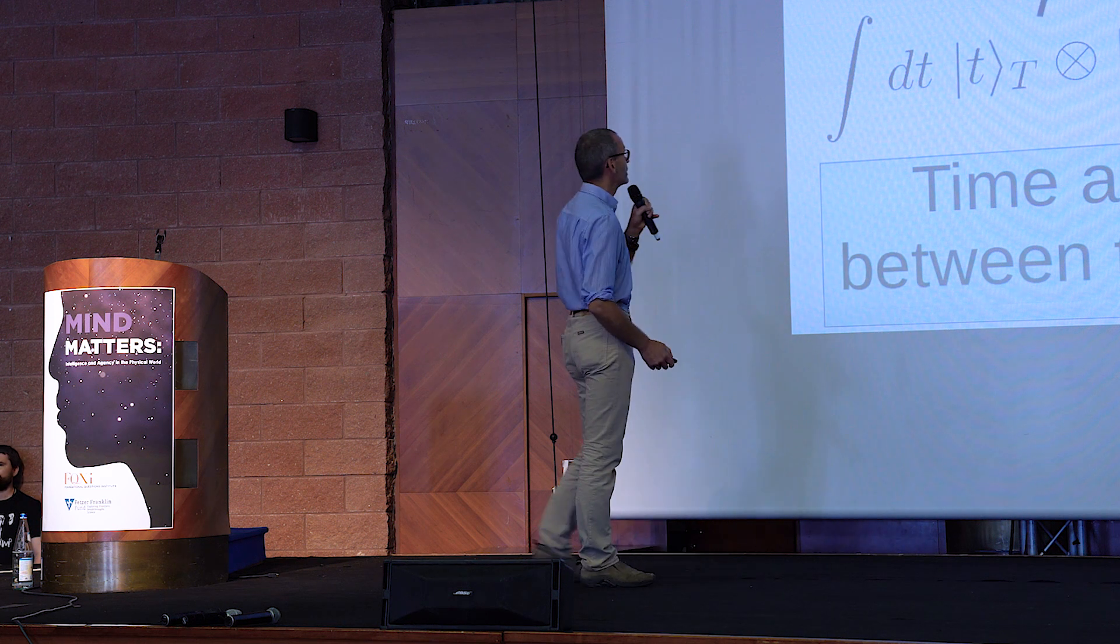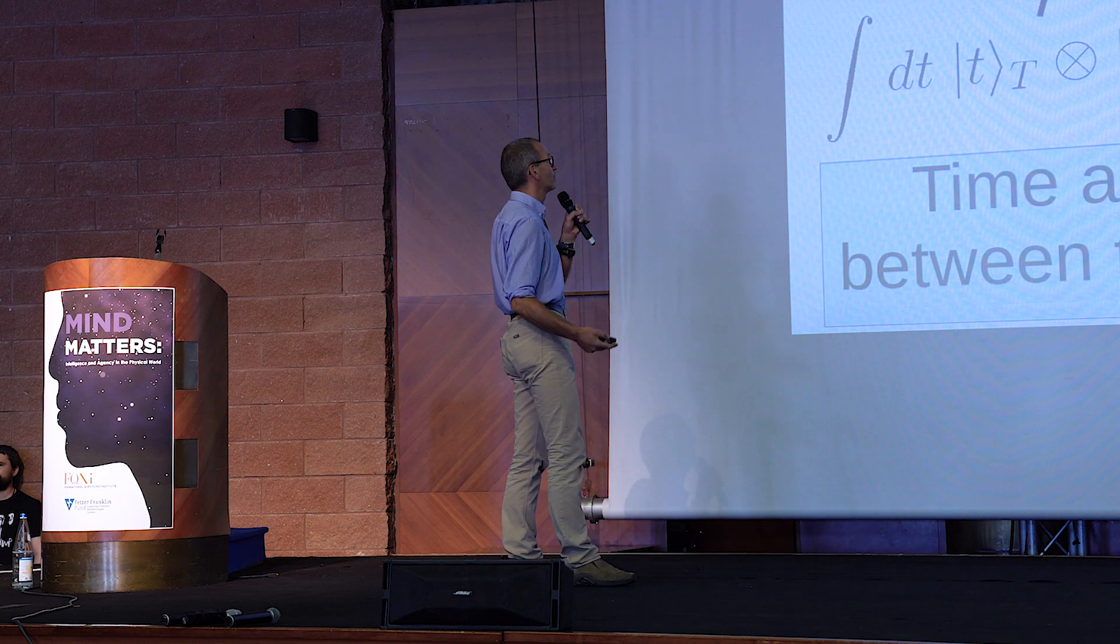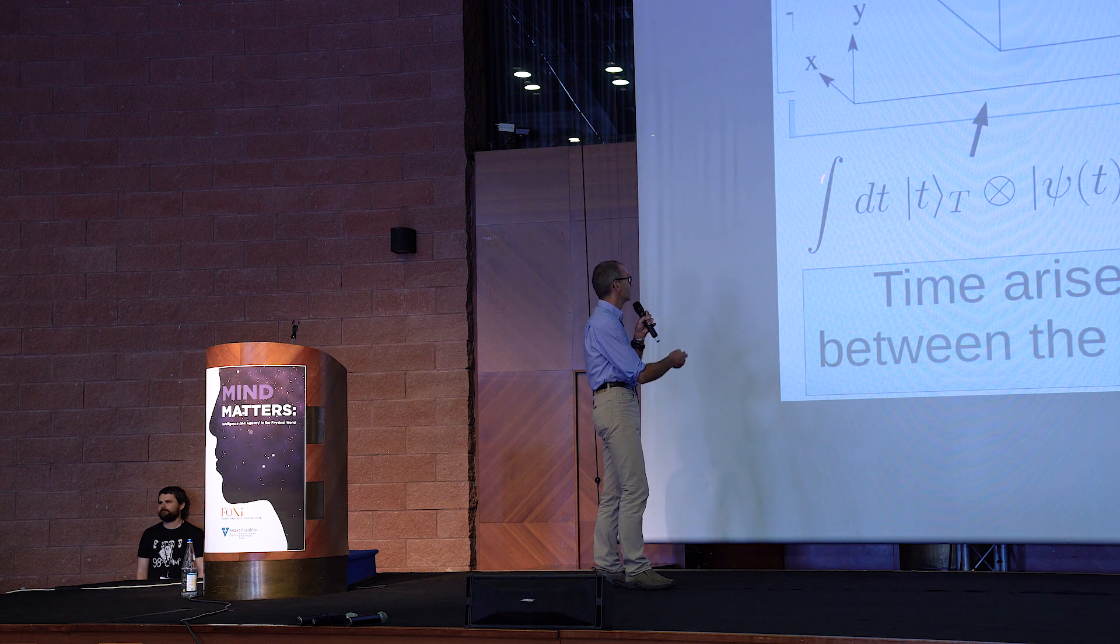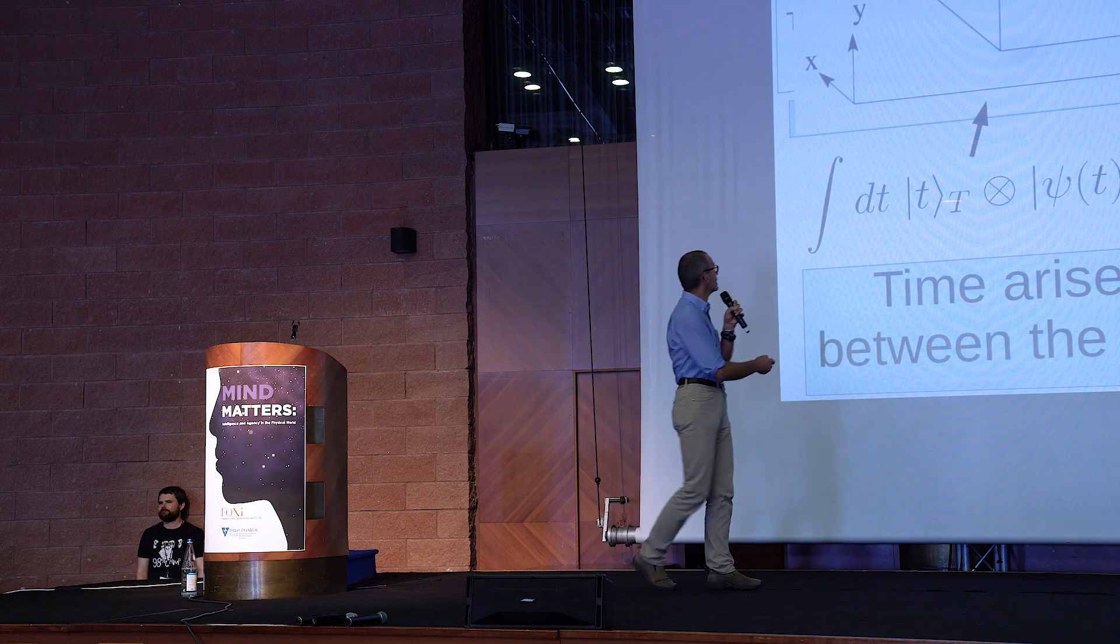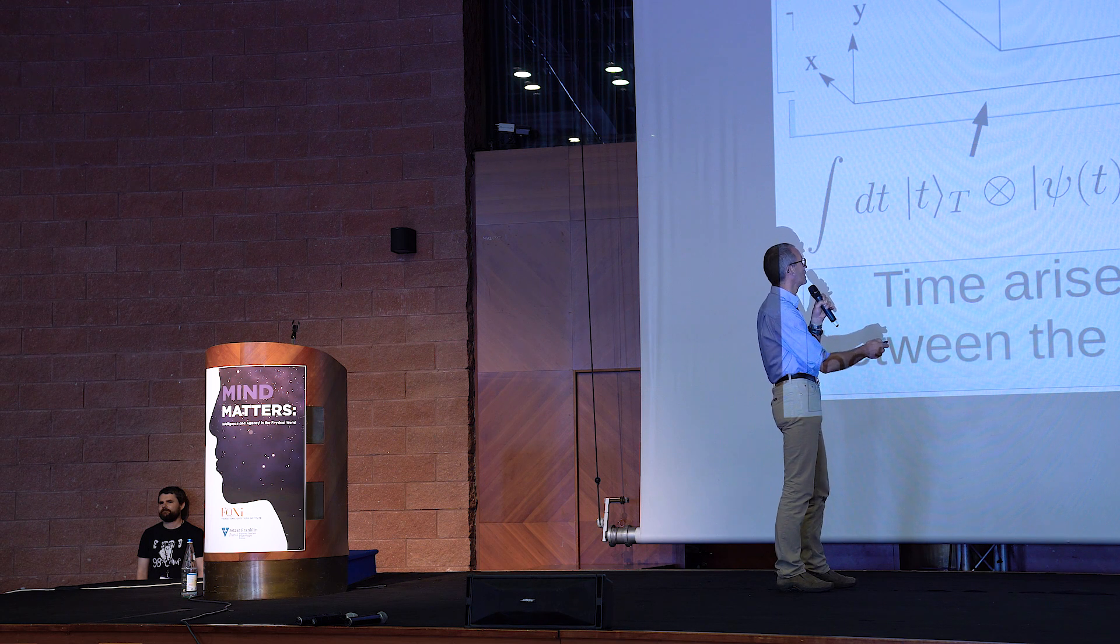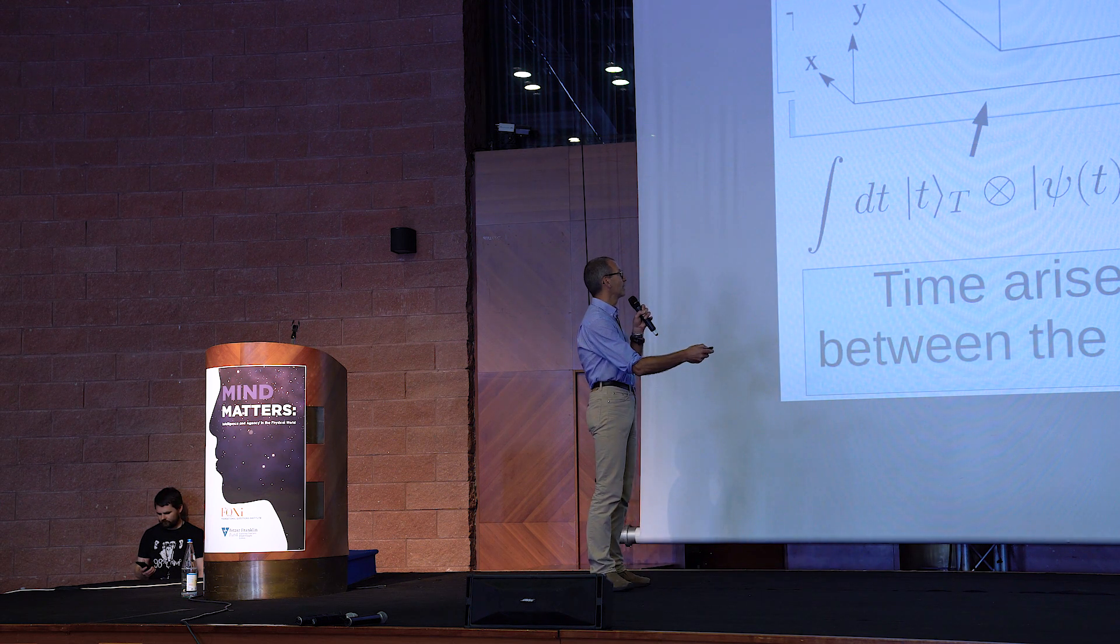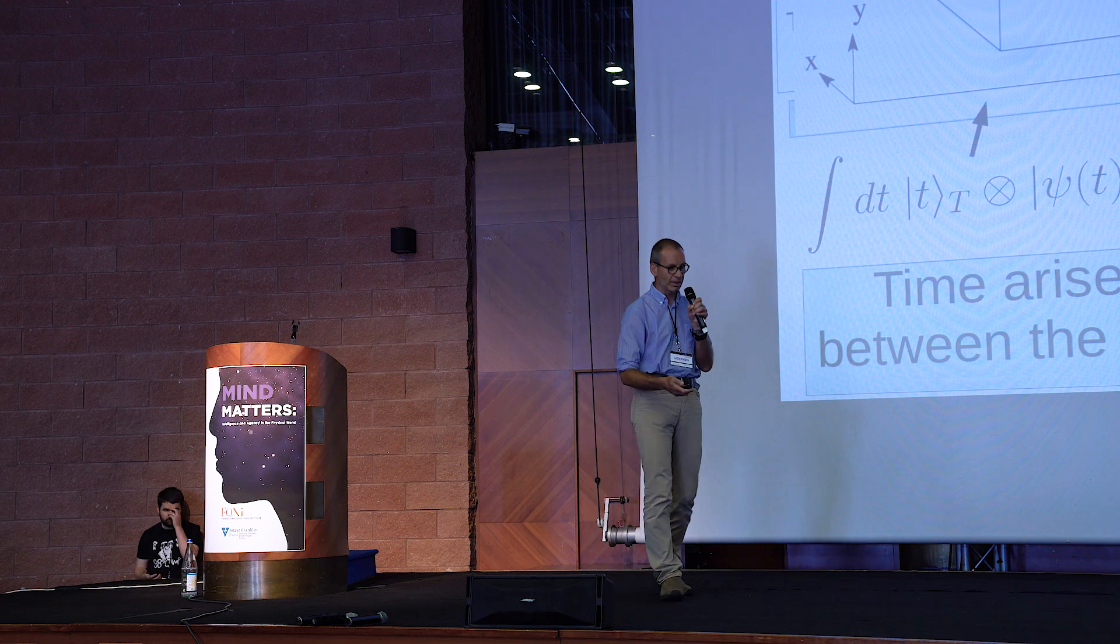Basically, what happens is it's a sort of a conditional probability interpretation because what happens is if you take this global state, you have the internal degrees of freedom of the system, this xy-axis, and then internally you also have the t degrees of freedom of the time. If you condition, you can see it clearly from this state here. If you condition on the clock showing time t zero, you get the state of the system psi at time t zero, so it's a conditioned state.